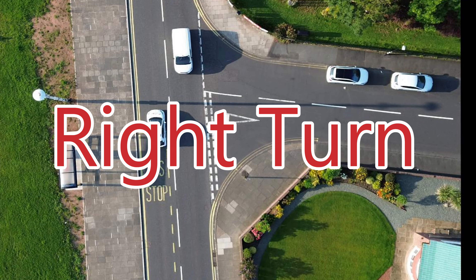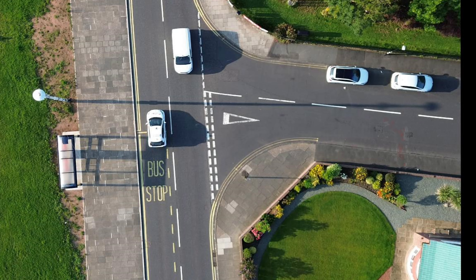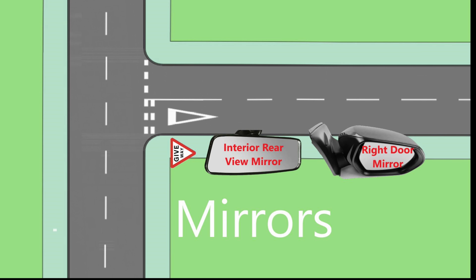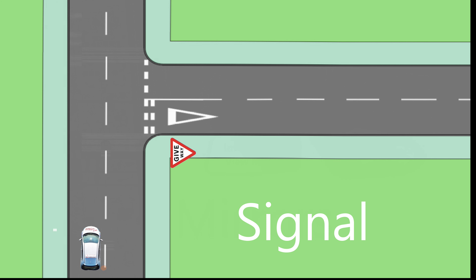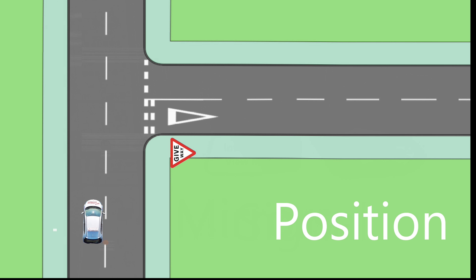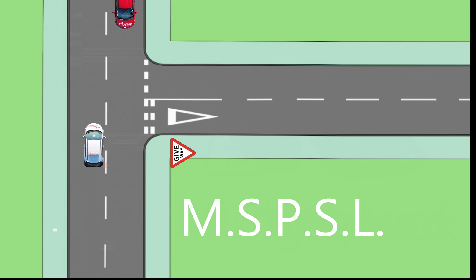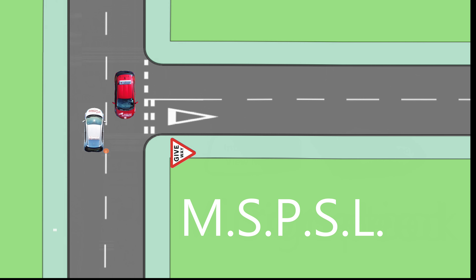Right turn. On approach to the right turn, this is the basic procedure. Mirrors: glance at the rear view, then right door mirrors. Signal right. Move to the right, staying this side of the center line. Speed: slow down for the turn.